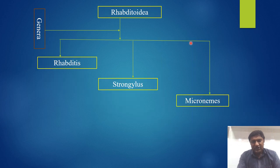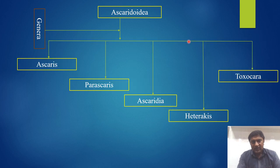The Rhabditoidea have the following genera: Rhabditis, Strongyloides, and Micronema. Ascaridoidea have the following genera: Ascaris, Parascaris, Ascaridia, Heterakis, and Toxocara.